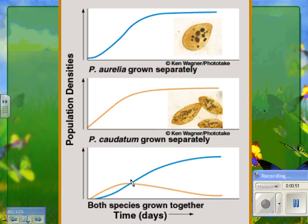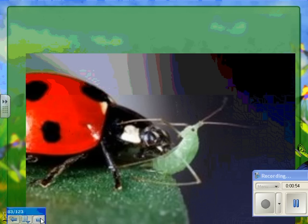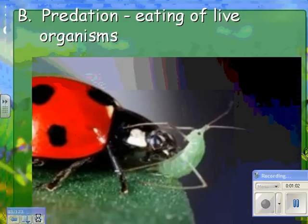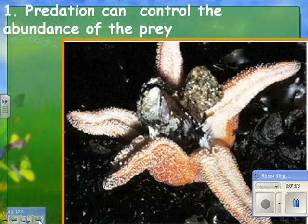When you put both species together, the aurelia outcompetes the caudatum. The next interaction is predation — the eating of live organisms. Here's a ladybug eating an aphid.